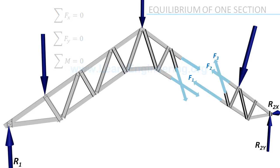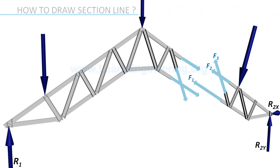The big question: how to draw a section line? Section lines should pass through the members whose internal force has to be determined. Section lines should not cut more than three truss members. This is because we got only three equilibrium equations, so we can solve only three unknown forces.